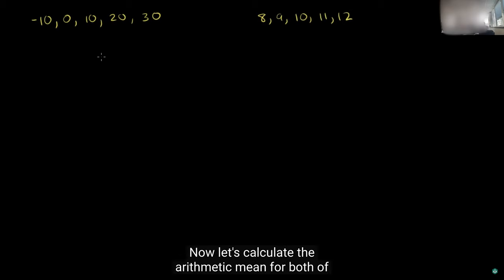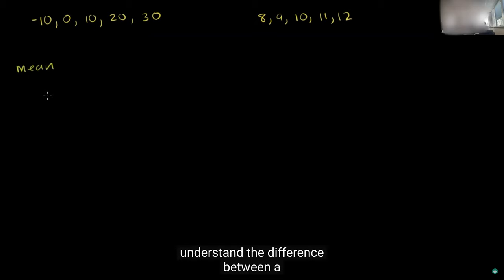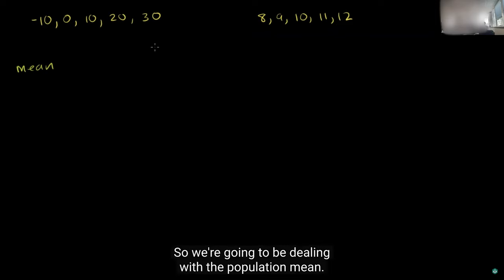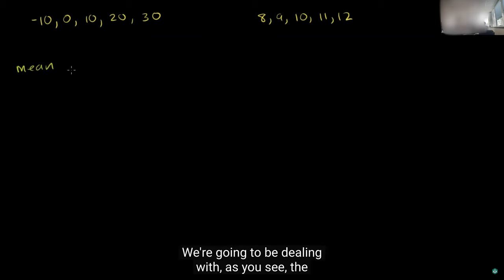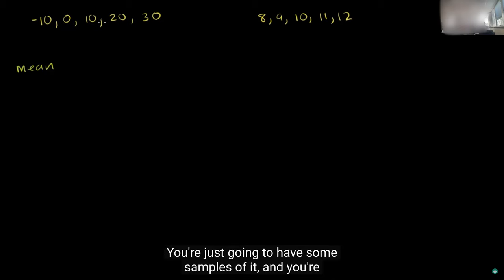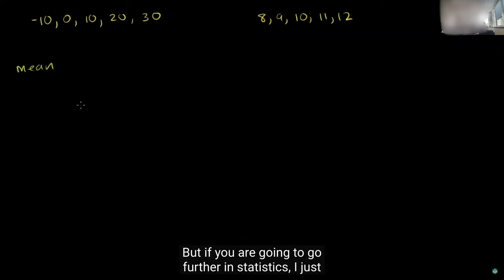Now, let's calculate the arithmetic mean for both of these data sets. When you go further on in statistics, you're going to understand the difference between a population and a sample. We're assuming that this is the entire population of our data, so we're going to be dealing with the population mean and the population measures of dispersion. In the future, you're not going to have all of the data — you'll just have some samples and try to estimate things for the entire population.